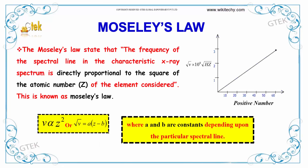We will talk about Moseley's law. Moseley's law states that the frequency of the spectral line in the characteristic X-ray is directly proportional to the square of the atomic number of the element.